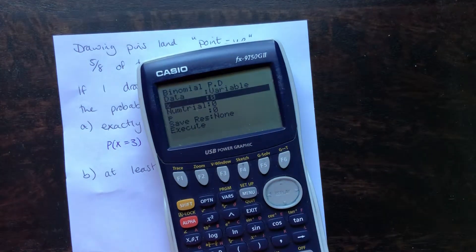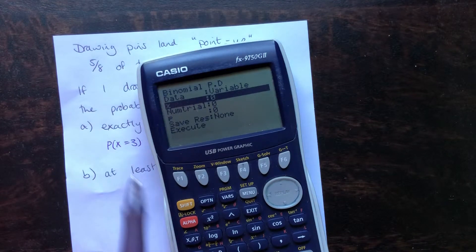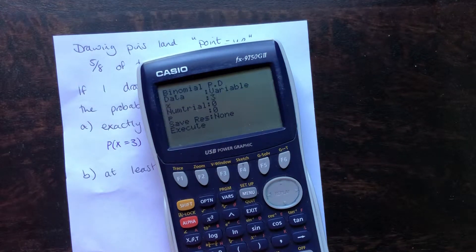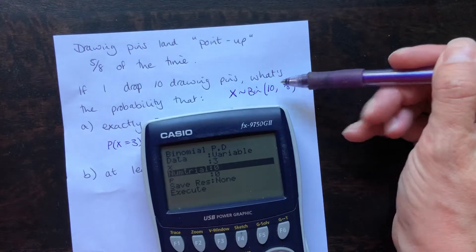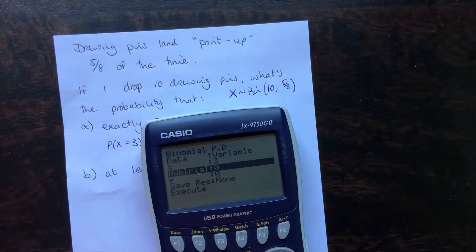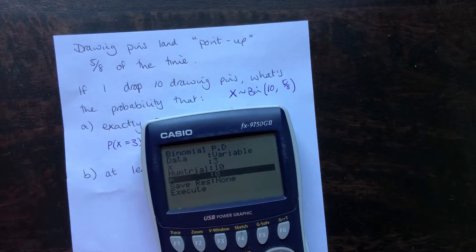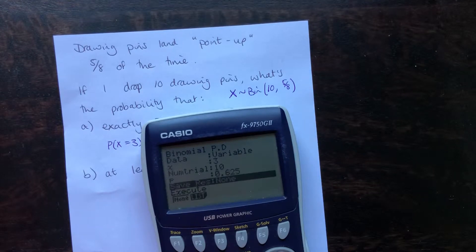X is the number we're testing for, which in this case is 3. We want the number of trials, which was 10. The 10 drawing pins were thrown, so that's our number of trials. The probability of success goes in for P, so that is 5 eighths, and press enter for it to store all of that information.